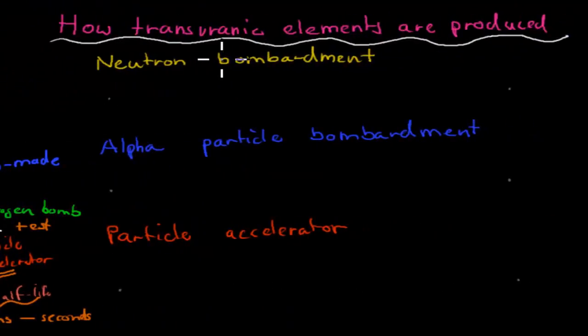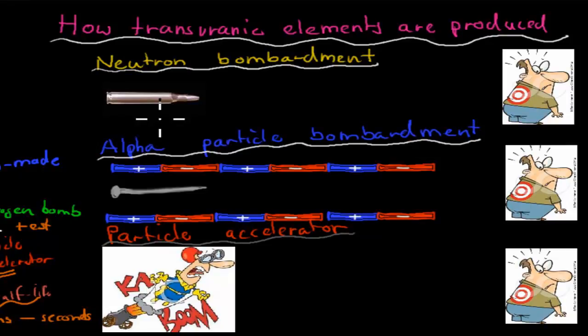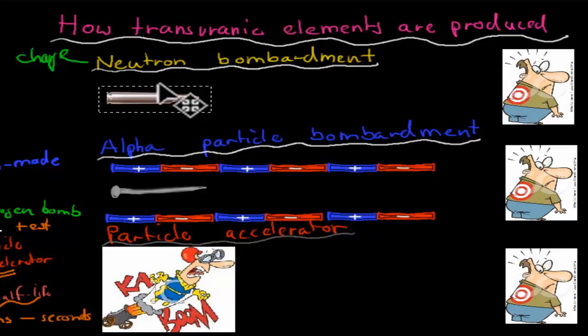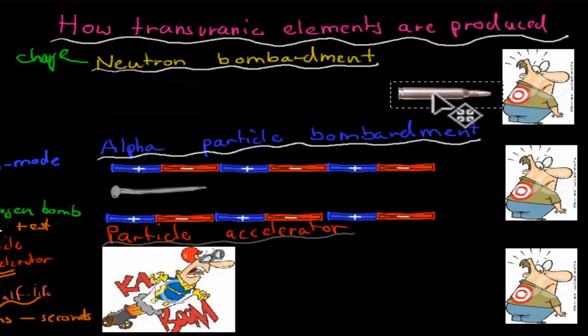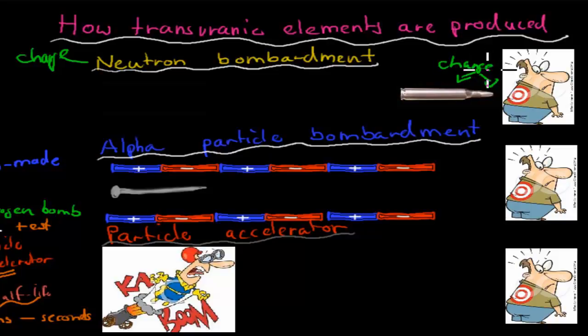And now when it comes to how transuranic elements are produced, I'm going to quickly first cover an actual analogy. I've got three different ways: neutron bombardment, alpha particle bombardment, and the particle accelerator. Now, with neutron bombardment, because the charge is neutral—so for neutrons, there's no charge on the actual neutron—what we actually do is we grab a neutron, which in this case you can think of it as a bullet. And bullets, they move straight. There's no charge, there's no magnetism or anything else moving in a different way. So it can actually move straight, like a bullet. And it will hit its target, and then the target will change. So this target will change once the neutron has hit it. And that's neutron bombardment.